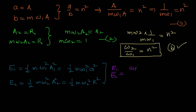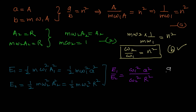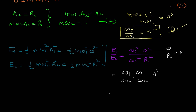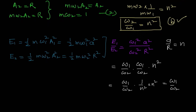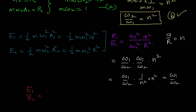We are given that A/r = n, and we found that ω₂/ω₁ = n², so ω₁/ω₂ = 1/n². Substituting: E₁/E₂ = (ω₁/ω₂) × (A/r)² = (1/n²) × n² = ω₁/ω₂. This simplifies to E₁/ω₁ = E₂/ω₂, which is option D. So option D is also correct.